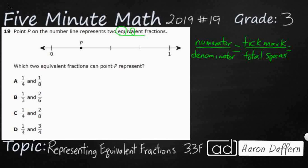So for this particular fraction, point P, it is on the first tick mark right here. So I'm going to have a numerator of one and then a total of one, two, three, four spaces. So this is going to be our fraction one fourth. It is one fourth of the way between zero and one.